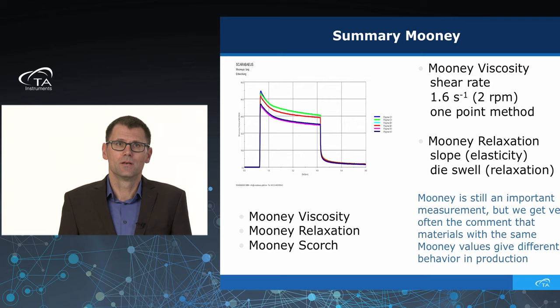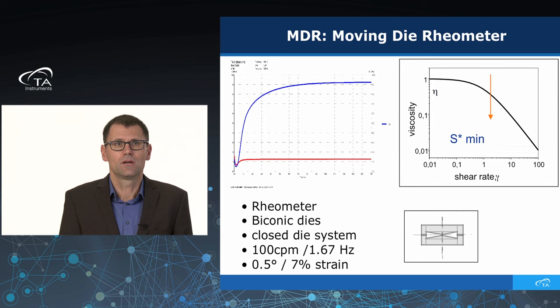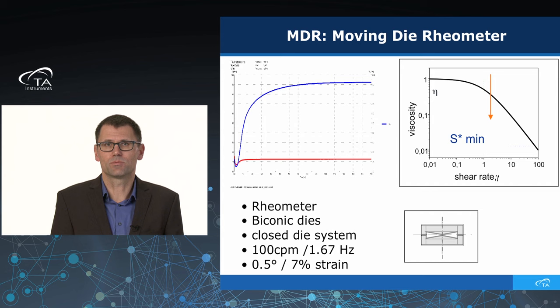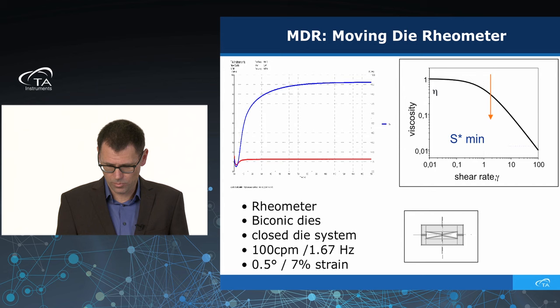The next step is the MDR, the moving die rheometer. The blue curve is a typical cure curve, which we all measure every day in the rubber industry, and the red curve is the viscous part, the S double prime. The rheometers on the market use bi-conic dies — closed dies, sealed with a rubber seal — with a fixed frequency of 100 CPM (1.67 Hz) and a strain of 0.5 degree, which is about 7% strain. But when you calculate the minimum of such a curve, you also have only one point on a viscosity curve — measuring only one shear rate and nothing more.